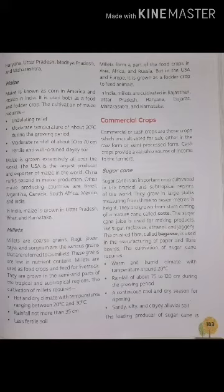Maize is grown extensively all over the world. The USA is the largest producer and exporter of maize. China ranks second in maize production. Other maize producing countries are Brazil, Argentina, Canada, South Africa, Mexico and India. In India, maize mostly comes from Uttar Pradesh, Bihar and Karnataka.